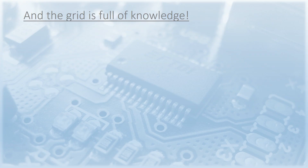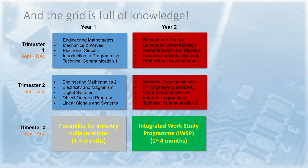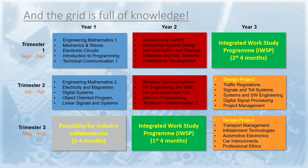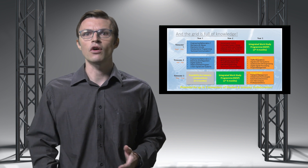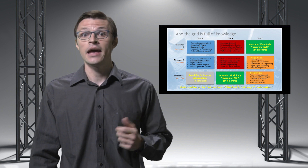To give you a glimpse into the content of our program, the foundation trimester contains subjects such as engineering mathematics, physics, electronics, and programming. In year two, some core modules are sensors and control, embedded system design, vehicle instrumentation, wireless communication, and automotive operating systems. The specialization modules in year three comprise traffic regulations, systems and software engineering, digital signal processing, automotive electronics, and car interconnects. Throughout the trimesters, we also offer soft skill modules such as technical communication, professional development, ethics, and project management.